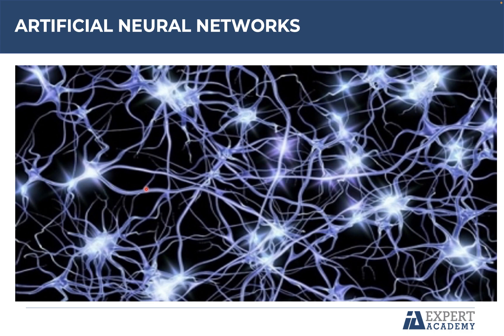The first point is that there are a lot of neurons — for example, one here, one here, another here, and so on. All these bright points are neurons. There is scientific research that indicates that the human brain has more than 100 billion neurons. It is a very large amount.